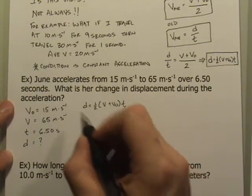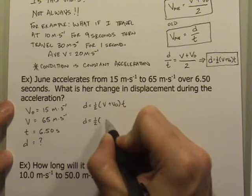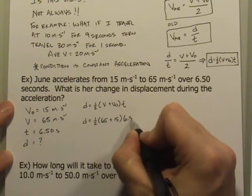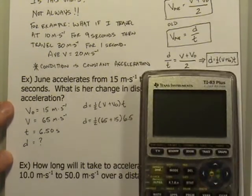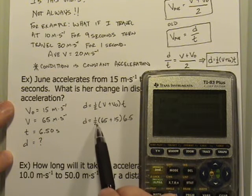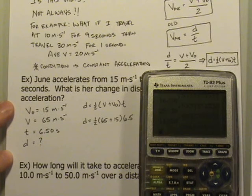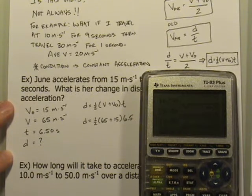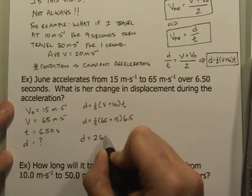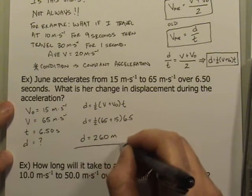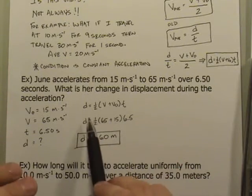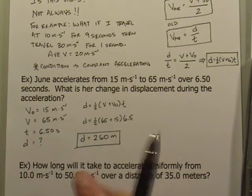So that is 1 half times 65 plus 15 times 6.5. And so 65 plus 15 is 80. Cut 80 in half. You get 40. So all we need to do is to take 40 times 6.5. And we get a final change in displacement of 260 meters. Okay, and that's a straightforward problem. That's using the equation in its standard form.